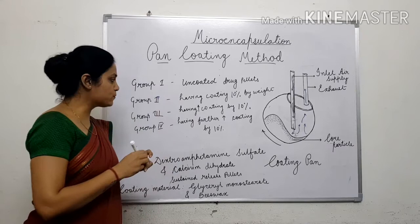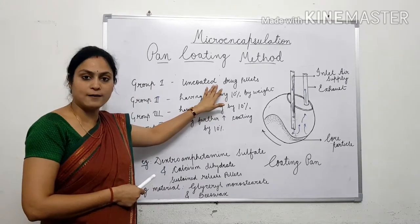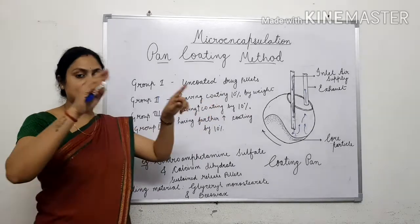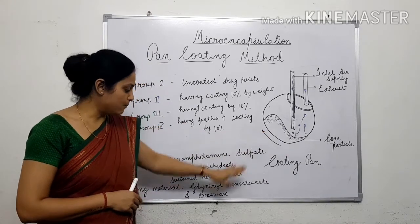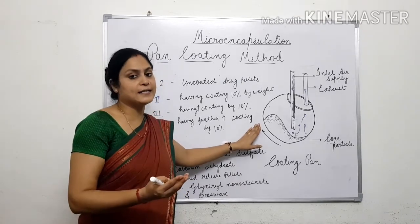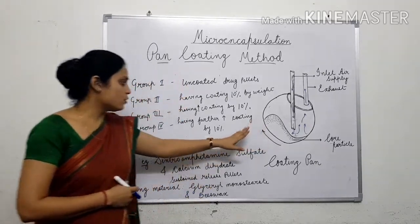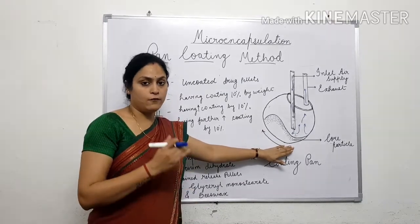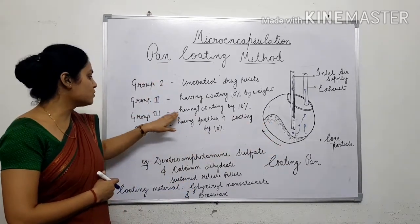The process continues with the help of this coating material, and the weight is further increased by another 10%. After drying of these pellets, half of the remaining pellets — that is again 25 grams — are taken out, which constitute Group 3. Group 3 has pellets with coating up to 10% weight increase from the first round, and then again a further 10% weight increase — so they have a little more coating as compared to Group 2.